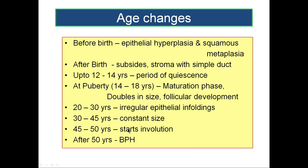Next, looking at the age changes of the prostate. Before birth, you find epithelial hyperplasia and squamous metaplasia in the prostate, due to the effect of circulating maternal estrogen. After birth it subsides and the stroma is filled with a simple duct system. This stays up to 12 to 14 years of age — this is the period of quiescence.